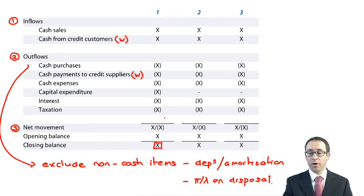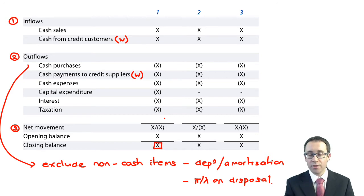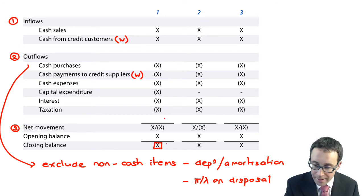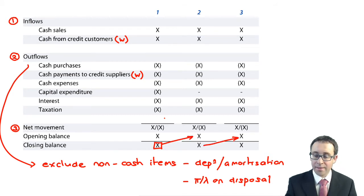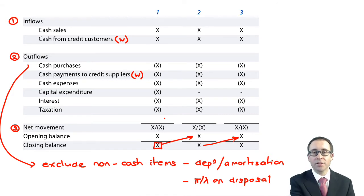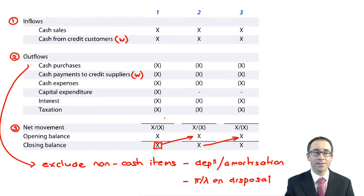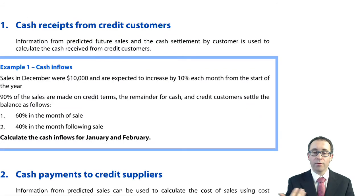Once you've got your inflows, you total those up; total up your outflows, net them off, and take your net balance. Adjust it with the opening balance to get the closing balance. And don't forget that whatever your closing balance is becomes the opening balance in the next month. That's the process. What's important now is to understand how we go through and calculate those numbers — starting with the cash receipts from credit customers.